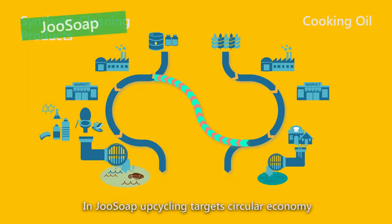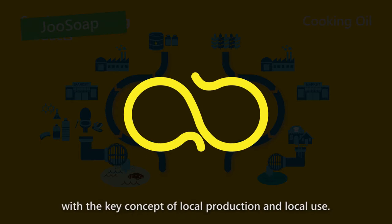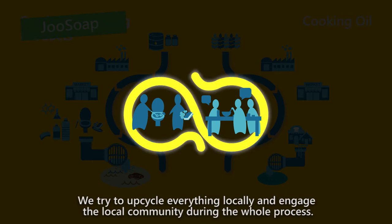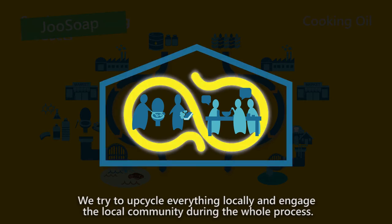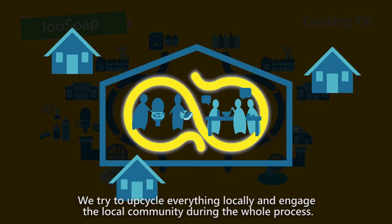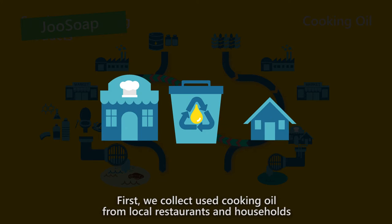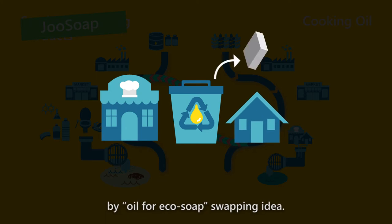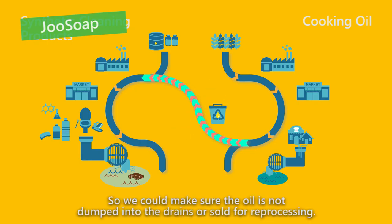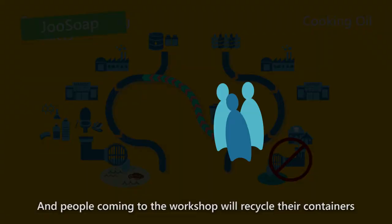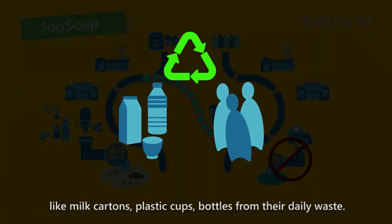In Yo Soap, upcycling targets circular economy with the key concepts of local production and local use. We try to upcycle everything locally and engage the local community during the whole process. First, we collect used cooking oil from local restaurants and households by an oil-for-eco-soap swapping idea, so we can make sure that the oil is not dumped into the drains or sold for reprocessing. People coming to the workshop will also recycle their containers — milk cartons, plastic cups, and bottles from their daily waste.